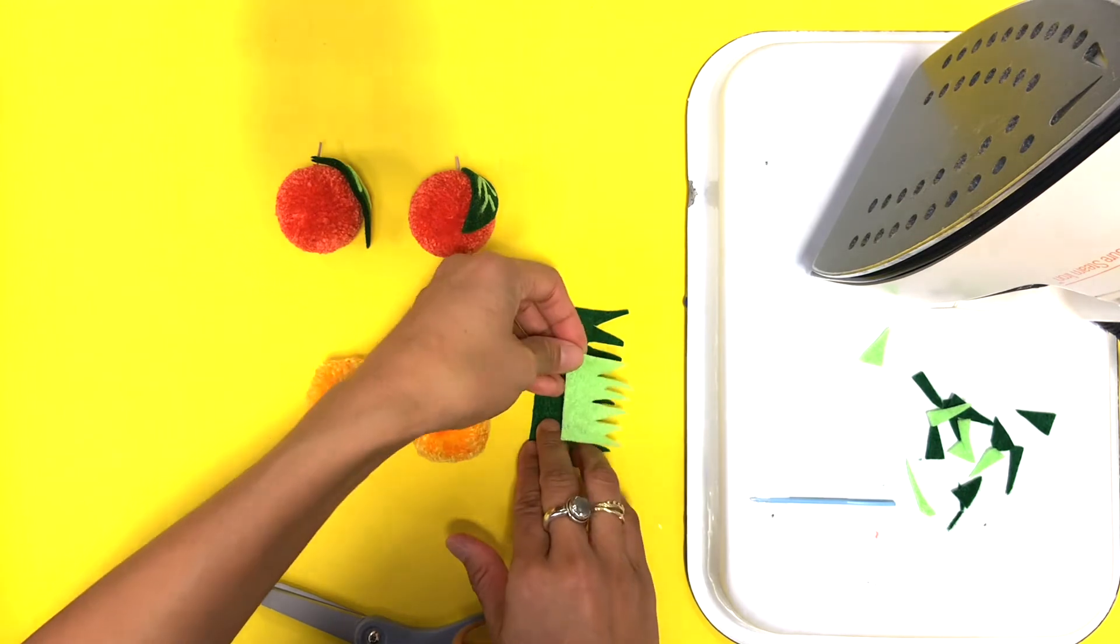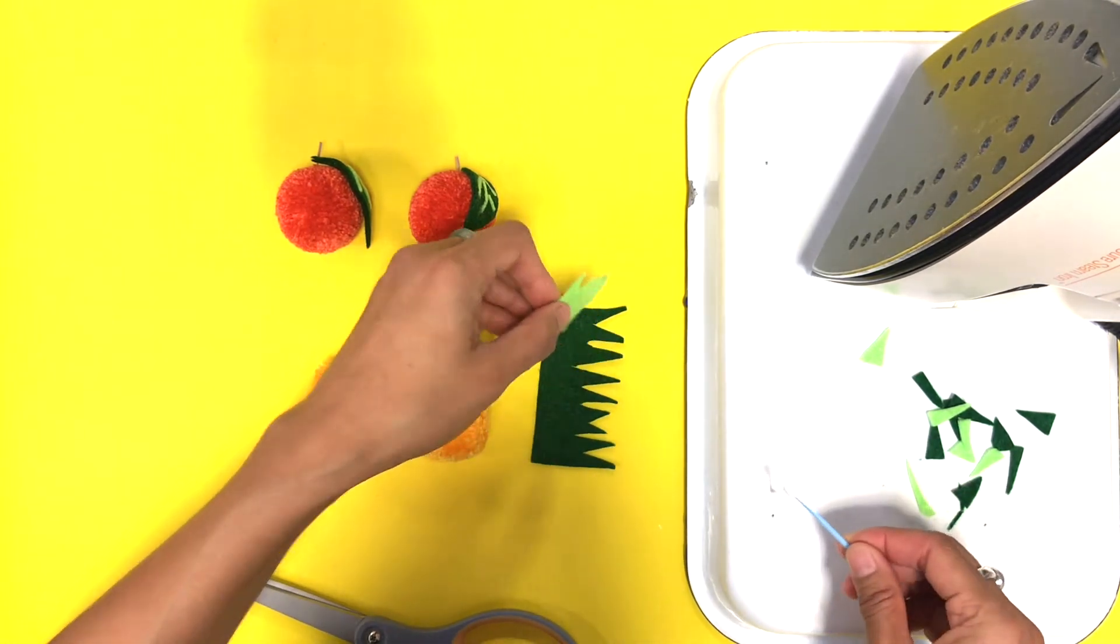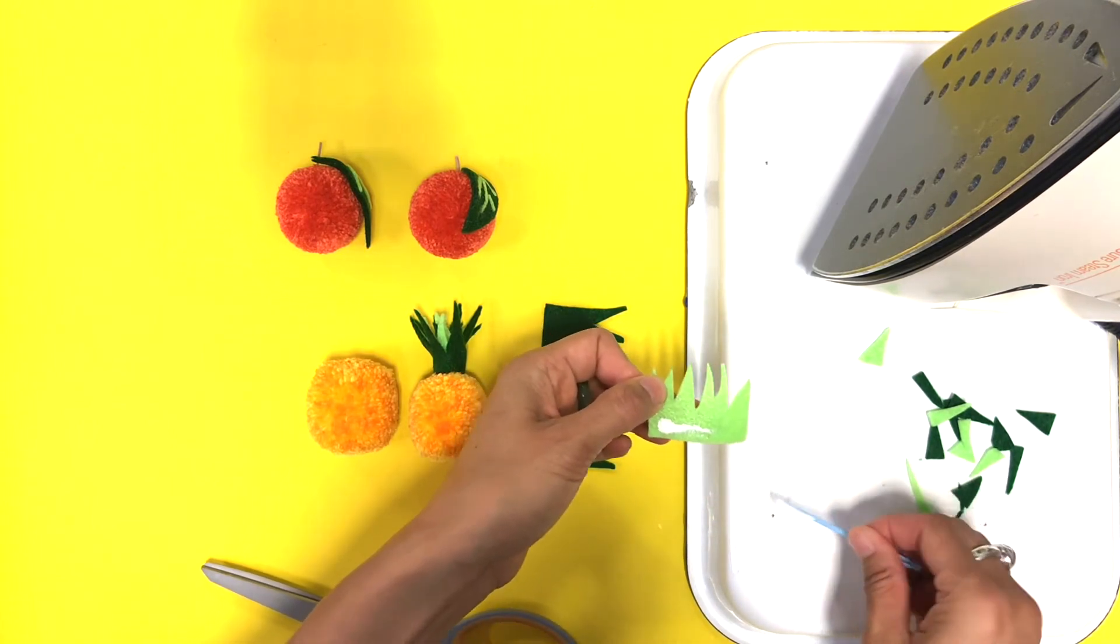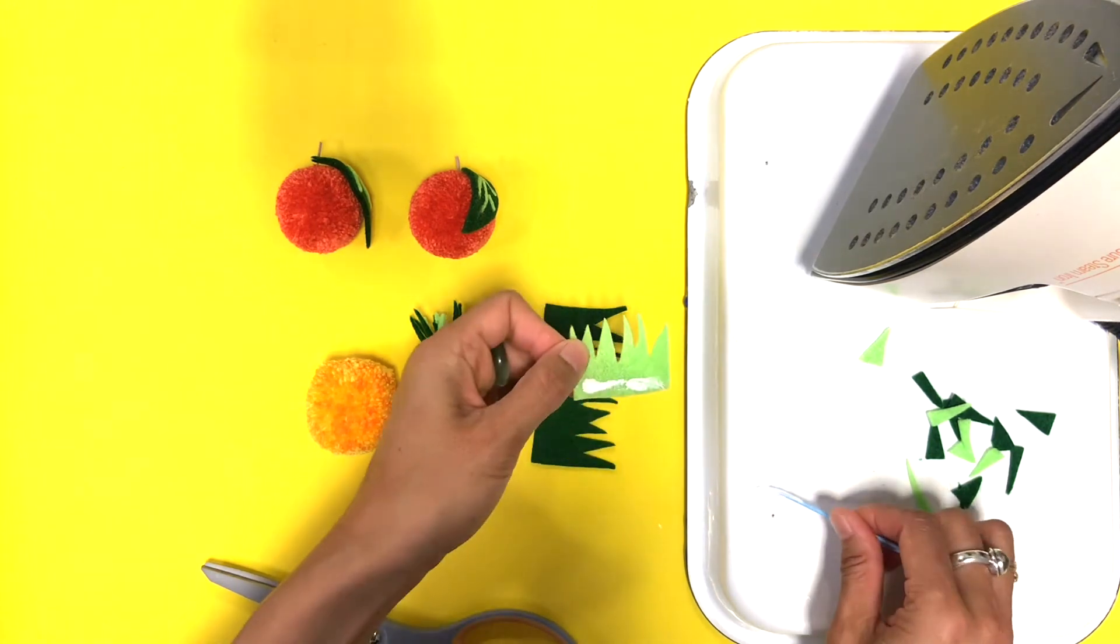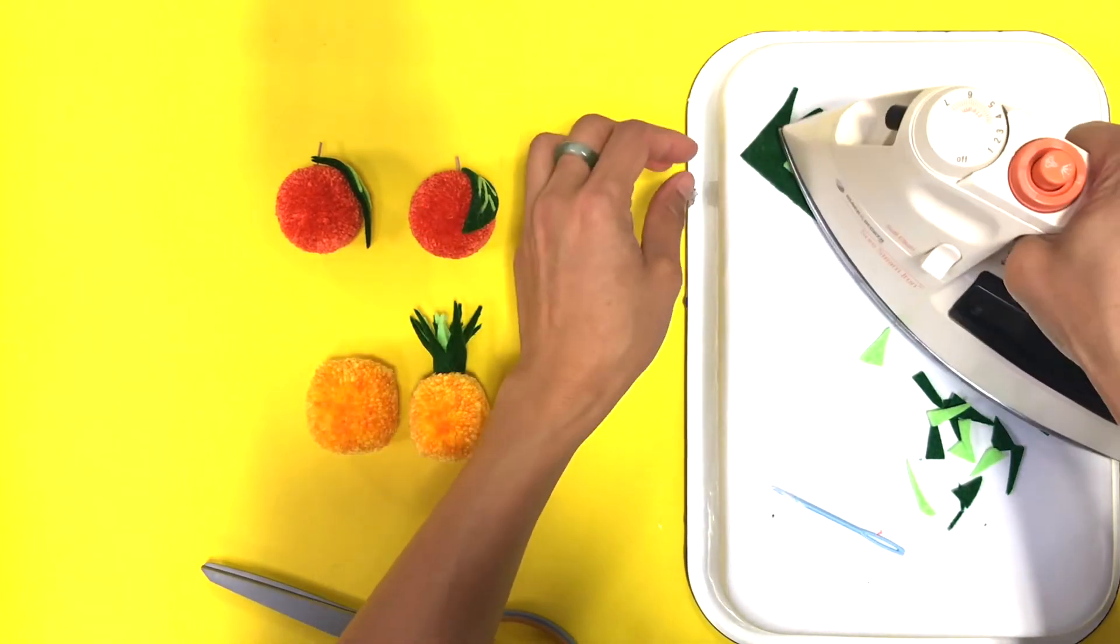Now what I'm going to do is I'm going to lay this right here just to see what that looks like, and I'm going to put some glue on here. This glue is drying up, I can see it already, so I'm going to work a little bit faster. Then I'm going to press.